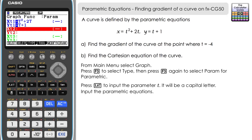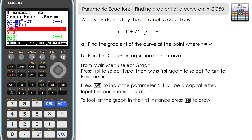Both equations are now selected — you can tell because the equal signs are highlighted, indicating they're ready to draw. Let's see what the graph looks like initially before making any changes. It's F6 to draw.